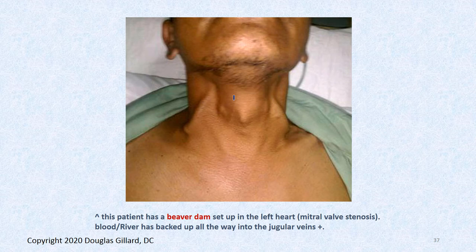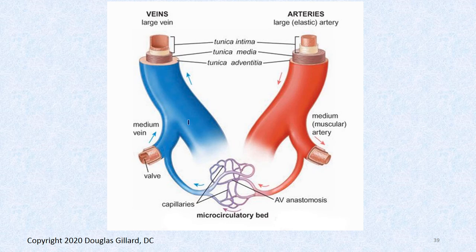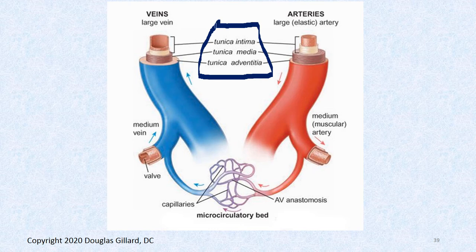Blood vessel wall basic histology: remember there's a tunica intima, tunica media, and tunica adventitia. You need to know these layers like your ABCs because I'm going to talk about them constantly. Tunica intima is the innermost layer — intimate with the blood. Tunica media — M for middle. Tunica adventitia — adventures happen on the outside. Watch out for AKAs: tunica interna for intima, and tunica externa for adventitia.